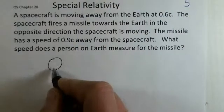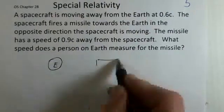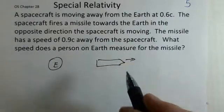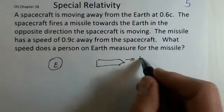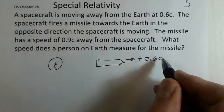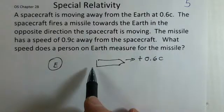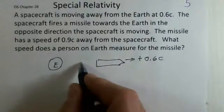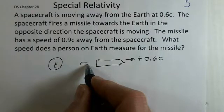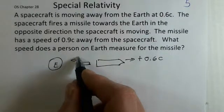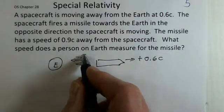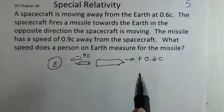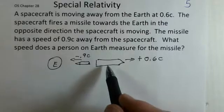So let's draw a little Earth, not to scale spacecraft, moving off to the right at plus 0.6c. The spacecraft fires from the aft missile launchers a little missile, and this missile is traveling off to the left, away from the spacecraft. So 0.9c, with respect to the spacecraft.